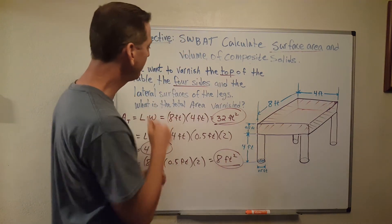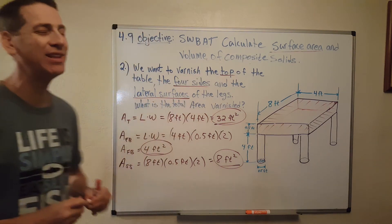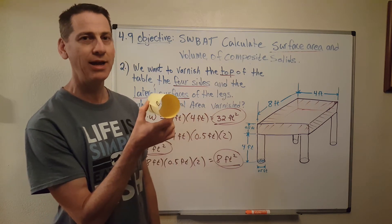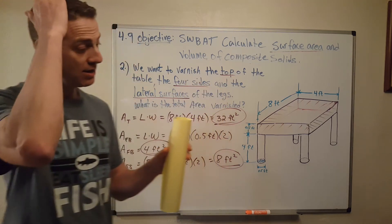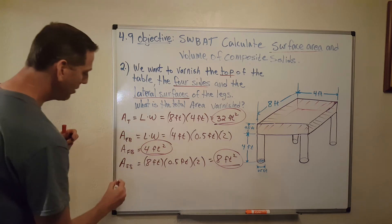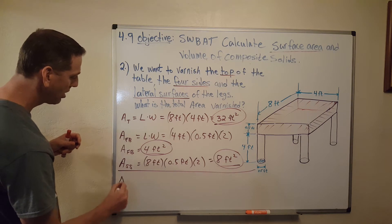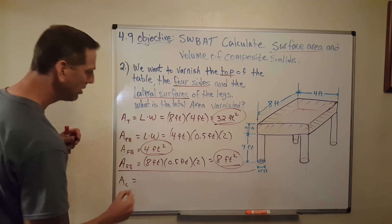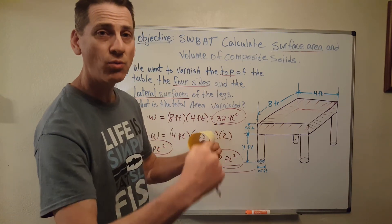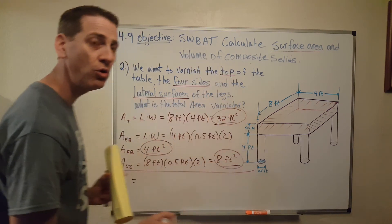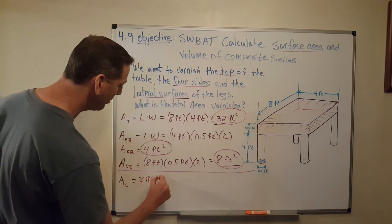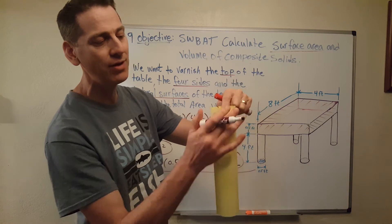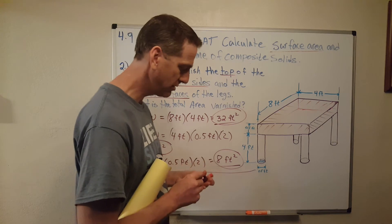Now I need to find the area of the lateral surfaces of the legs — and the legs are cylinders. A cylinder has circles on the ends and a lateral face around the side. The full surface area formula for a cylinder is: two pi r squared (for the two circles) plus two pi r times the height for the lateral face. This is all on the formula sheet I provide.